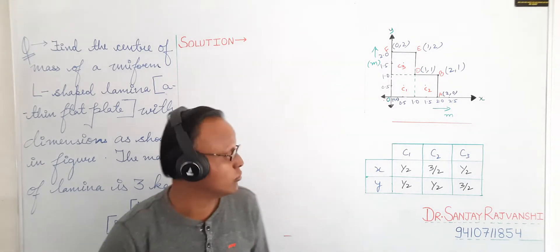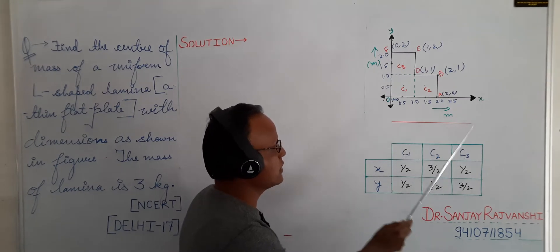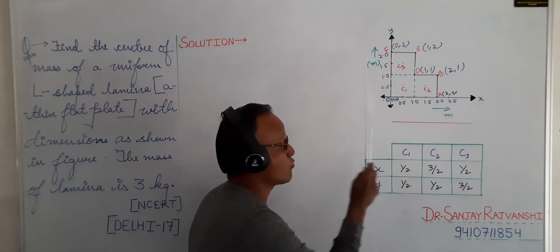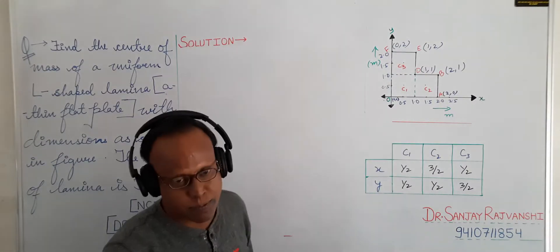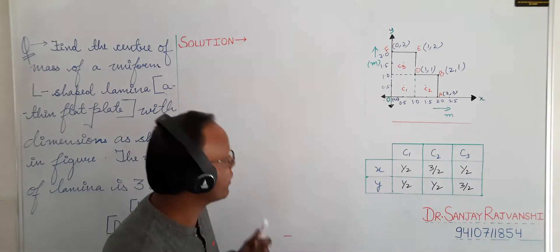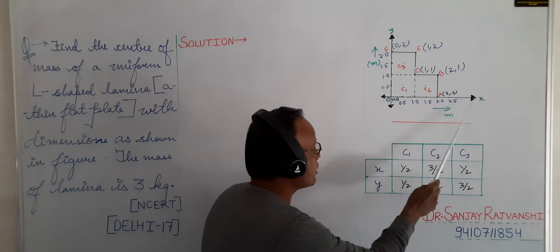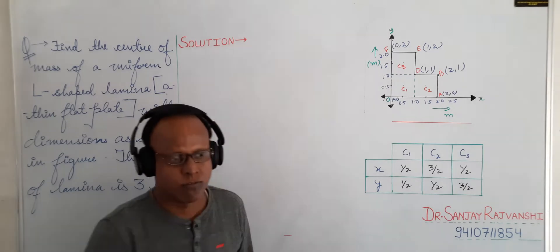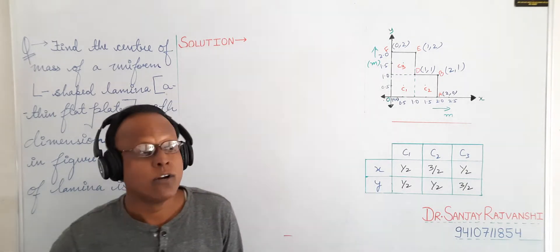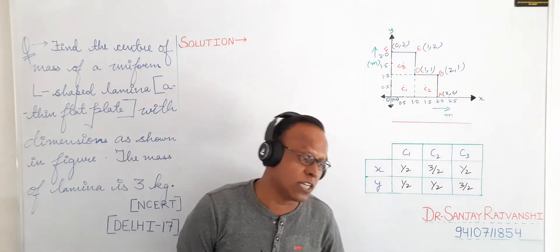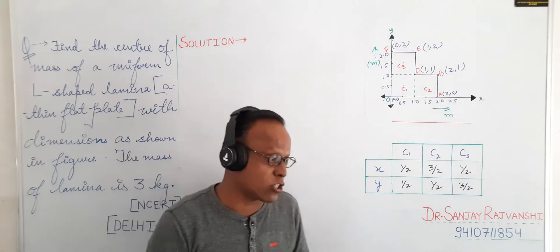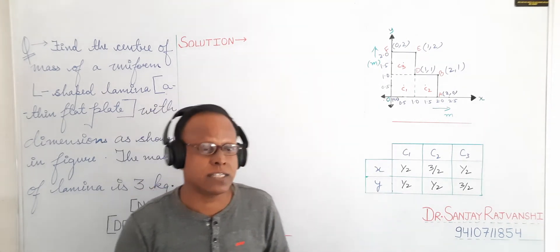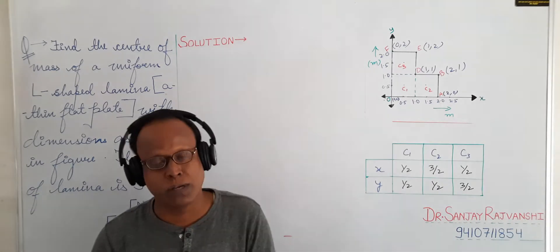0.5 means 1 by 2. So I make a table here for C1, C2, C3 — the centers of mass of square 1, square 2, square 3. For C1, the x-coordinate is 0.5 and y-coordinate is 0.5, that is 1/2 and 1/2. The formula to calculate center of mass is: Rcm = (M1·R1 + M2·R2 + M3·R3) / (M1 + M2 + M3).